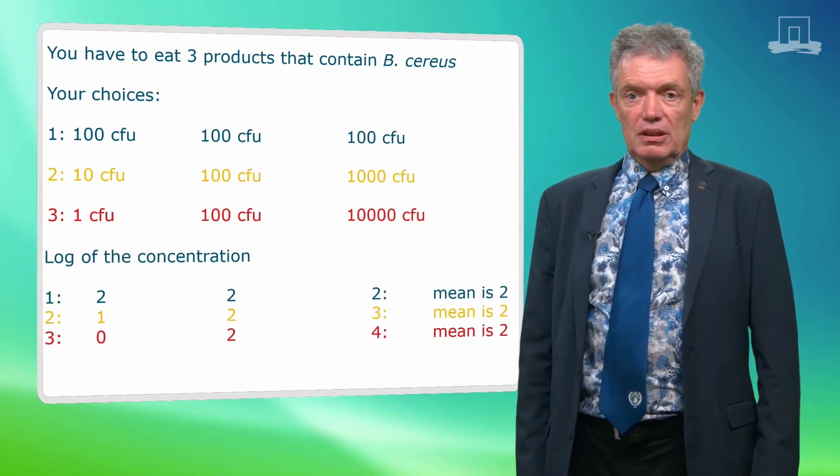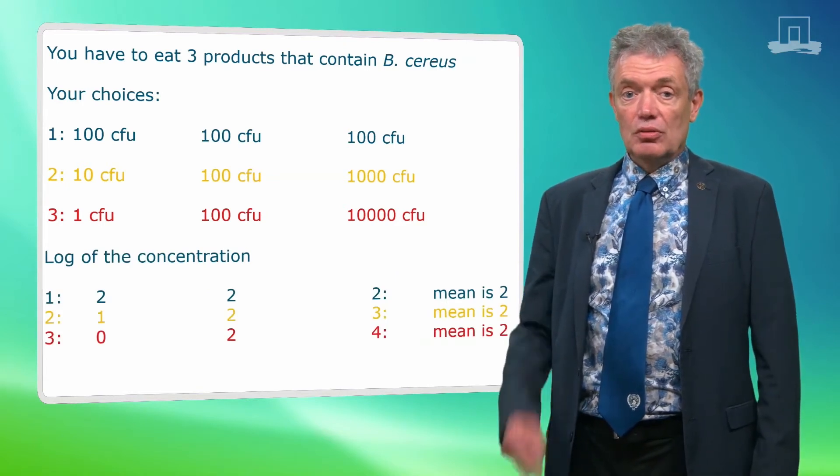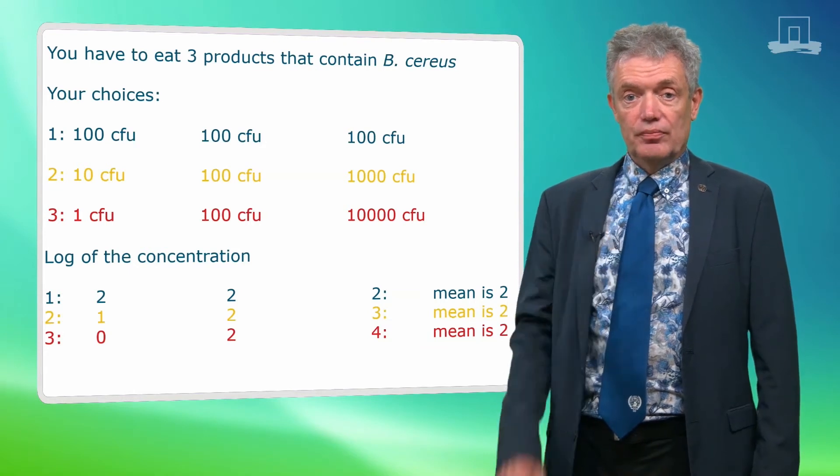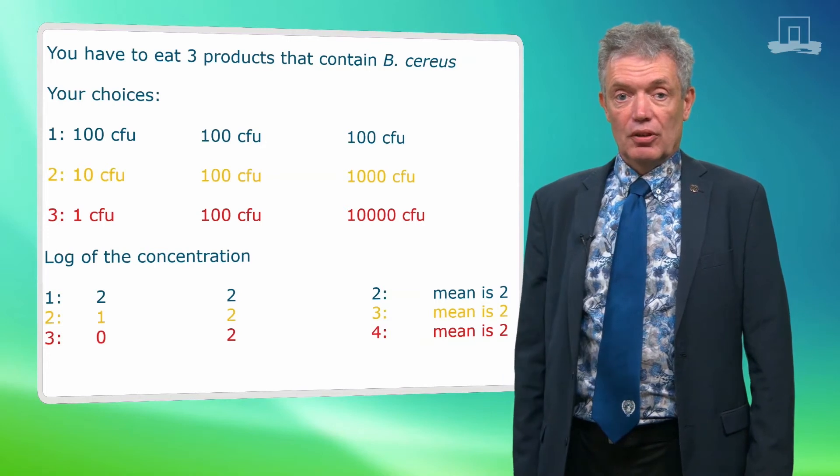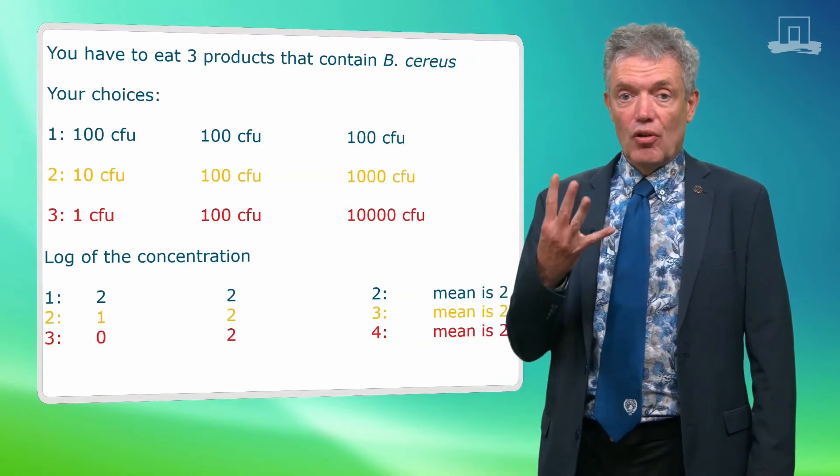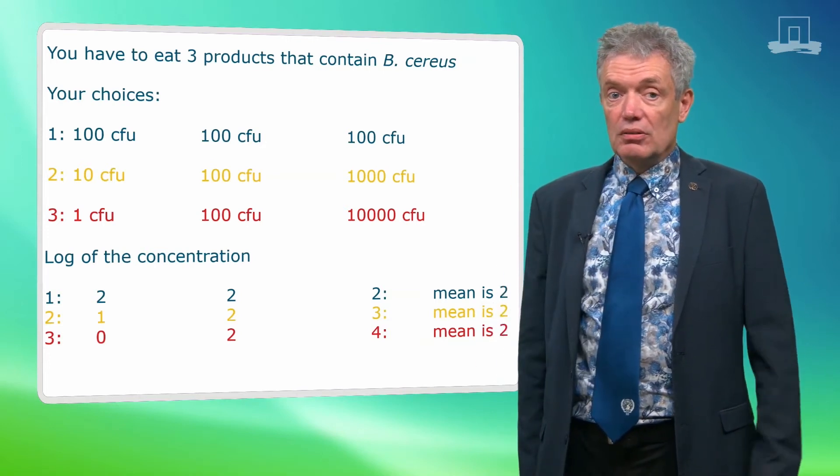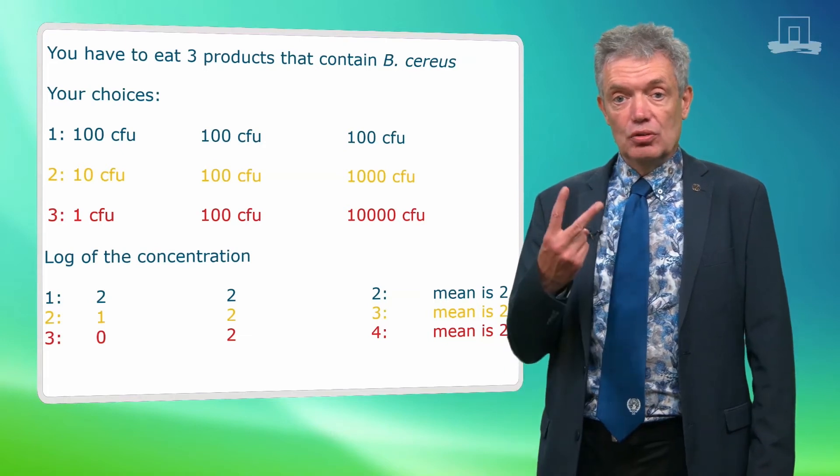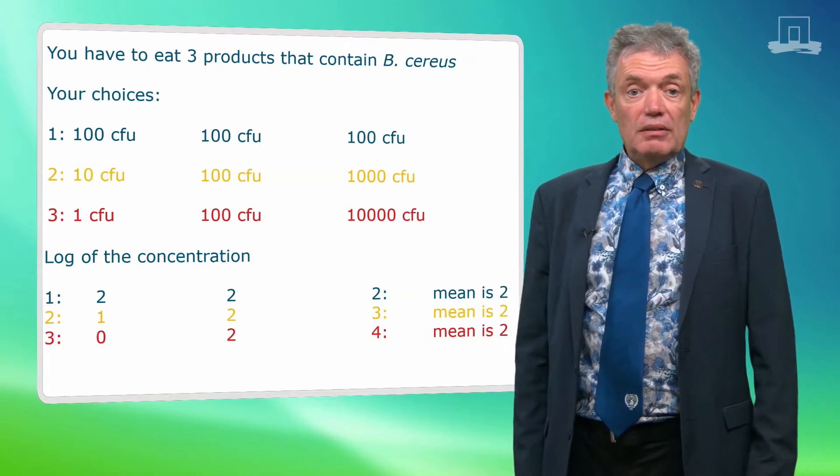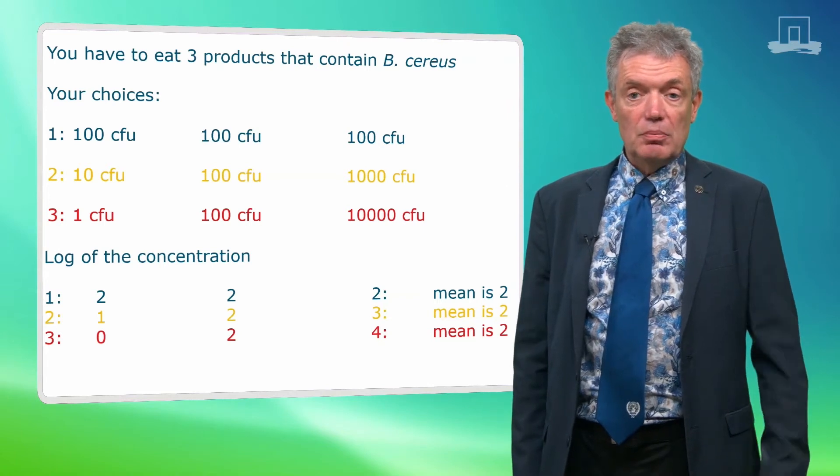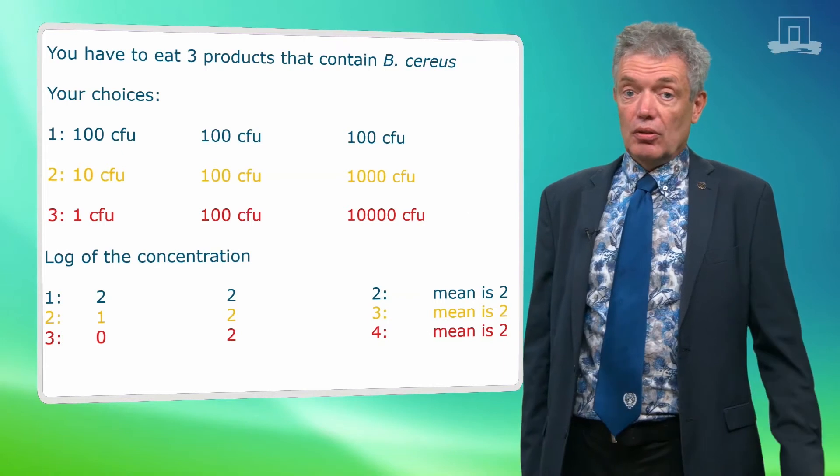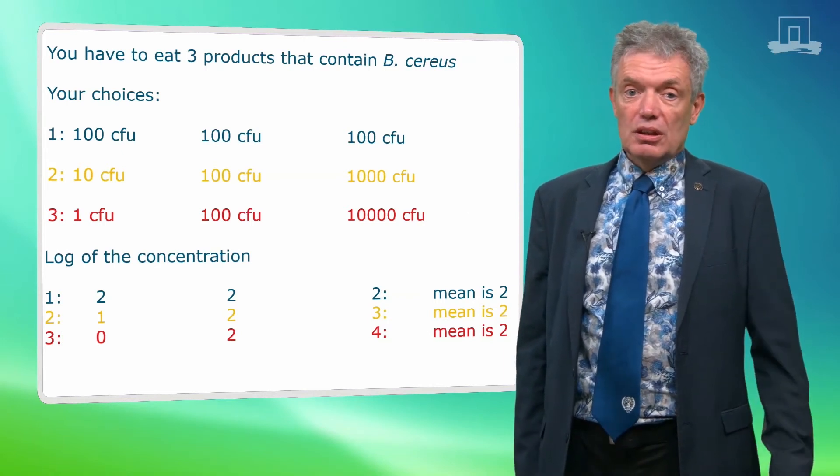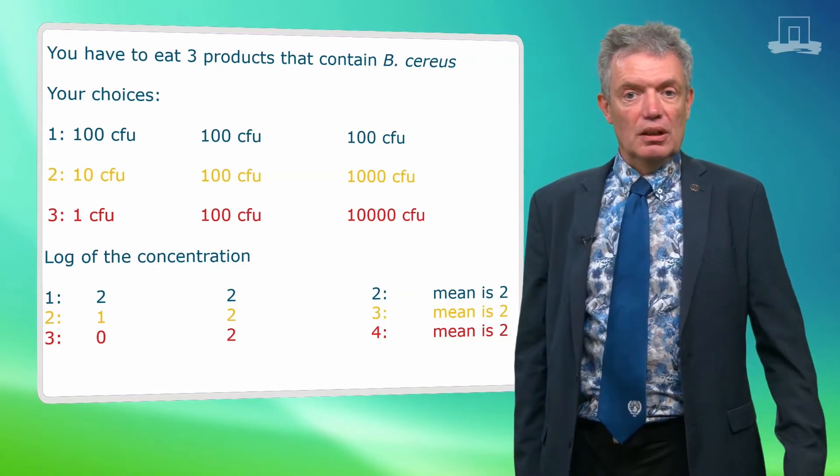Now, if we would first log transform these data, we get for the first row 2, 2 and 2. And for the second row 1, 2 and 3. And for the third row 0, 2 and 4. All these three rows on the log scale have as average 2. The geometric mean of all these three rows is 100, so 10 to the power 2. So the log geometric mean is 2, for all the three cases. So this is not a good indicator of the real exposure.